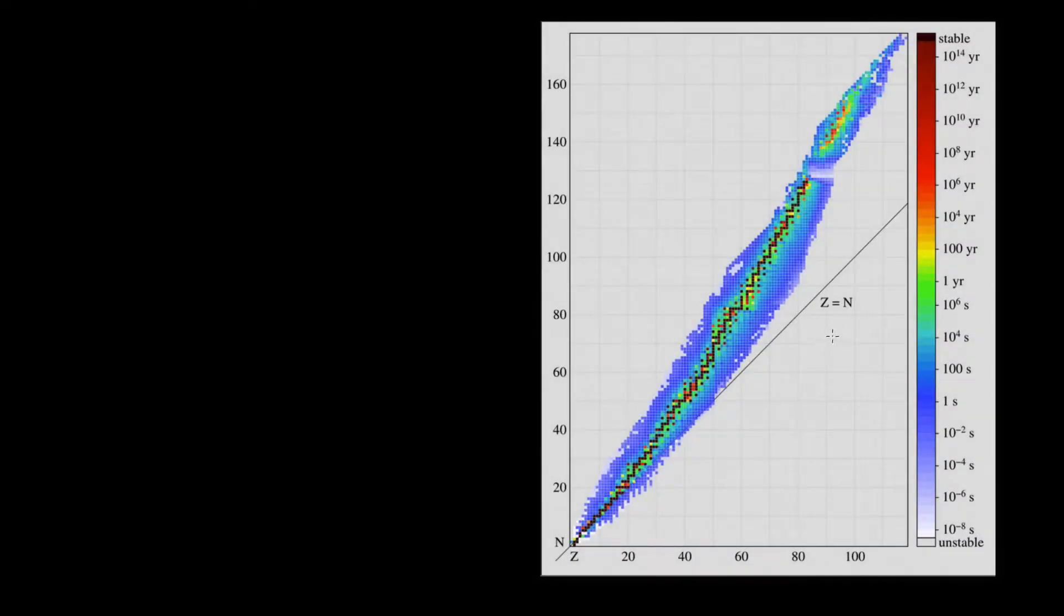What we have over here is a diagram which has the number of protons along the bottom, and up this axis is the number of neutrons.